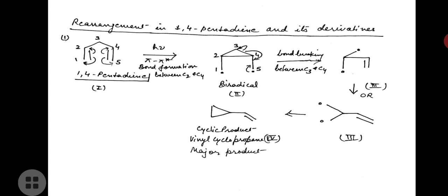The mechanism for 1,4-pentadiene: on irradiation a bi-radical is formed via a π→π* transition, with bond formation between C2 and C4. A second bi-radical is formed. Bond breaking then takes place between C3 and C4 (or alternatively between C2 and C3). Here, bond breaking between C3 and C4 is shown, forming a third intermediate, which on cyclization leads to the final cyclic product — vinyl cyclopropane — as the major product.